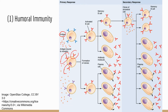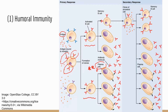Antigen binding triggers the formation of clones, and there are two different directions. Some of the clones will develop into plasma cells — this is very important. Plasma cells are B cell clones that secrete antibodies, so plasma cells are the specific B cells responsible for antibody production. The other branch develops into memory B cells, which do not directly secrete antibodies but instead maintain the memory of what the antigen is like.